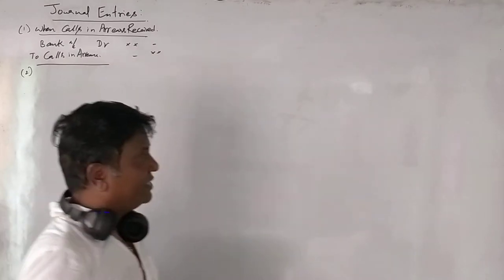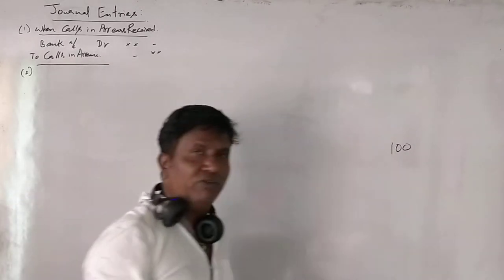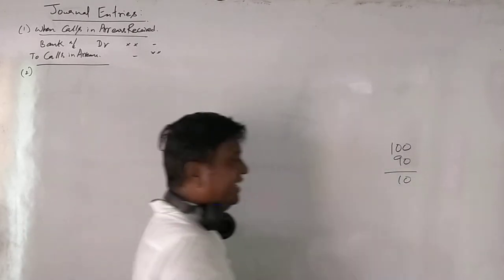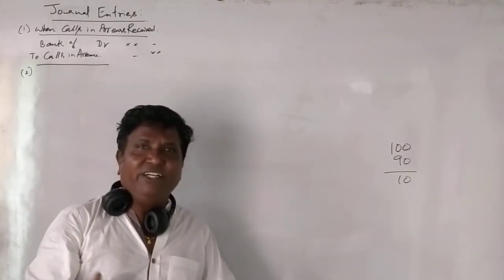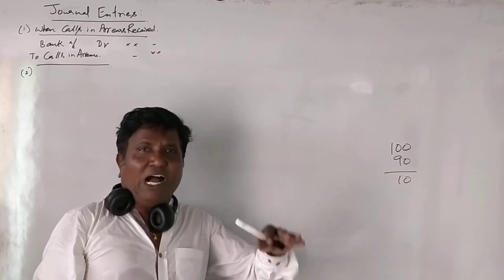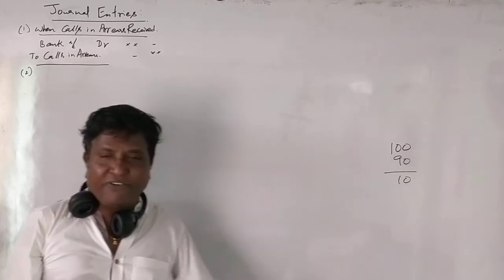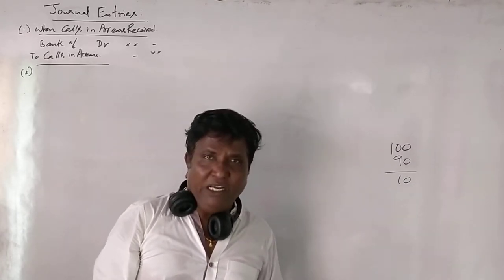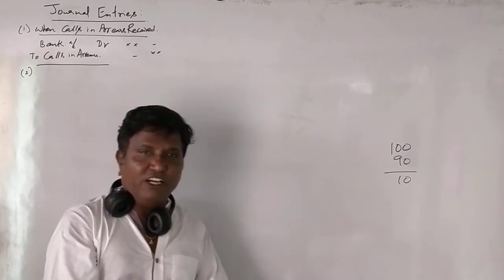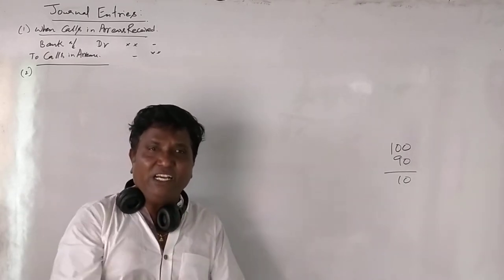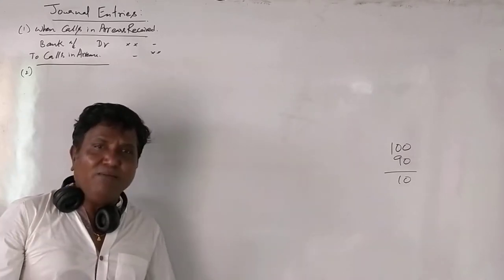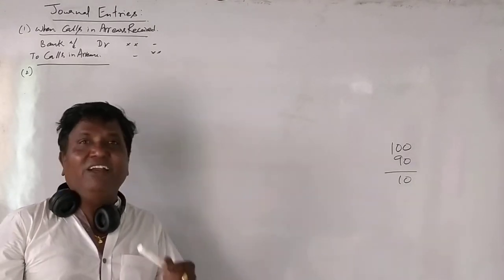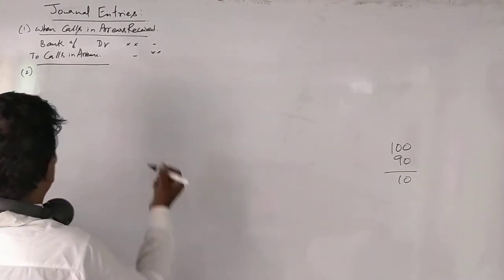The second situation is: suppose the face value of a preference share is 100 rupees, the company called up only 90 rupees, and the remaining 10 rupees was not called till the end of the tenure. At the time of redemption, the company needs to make a final call. Assume the company made the final call and received all the final call money. For any call money, we pass two entries — first showing it as due, then showing it as received.